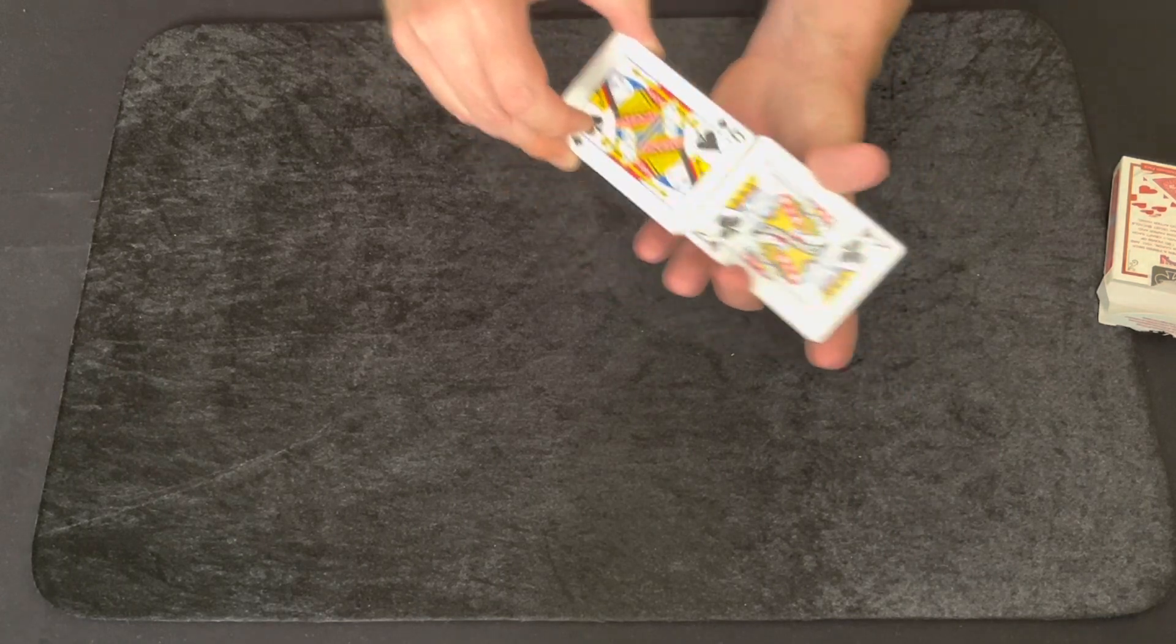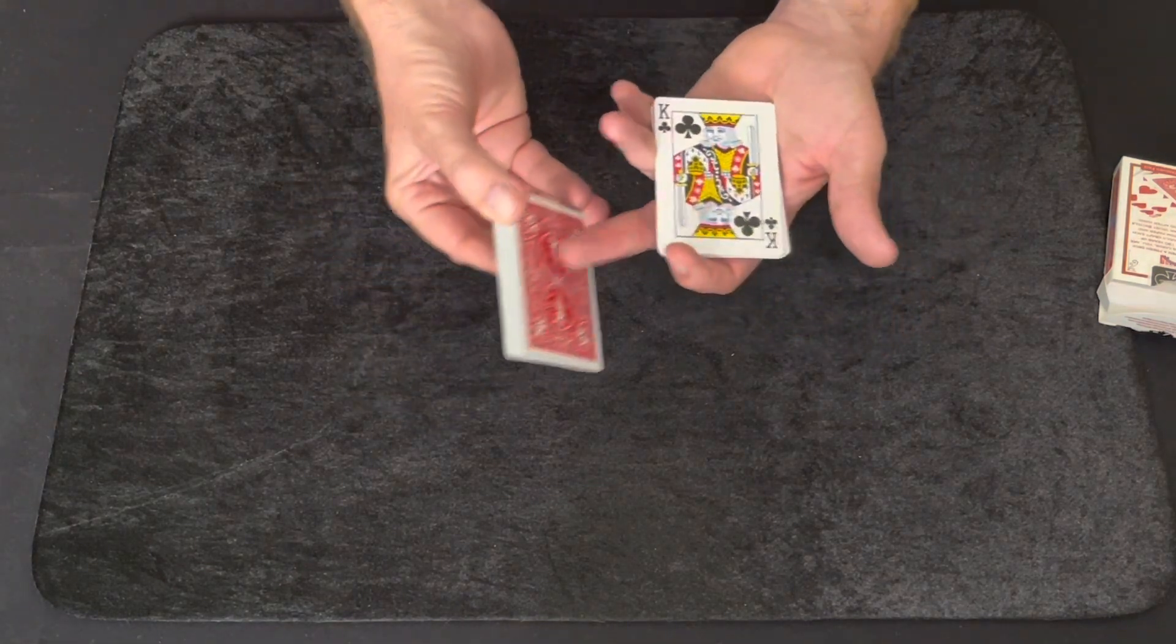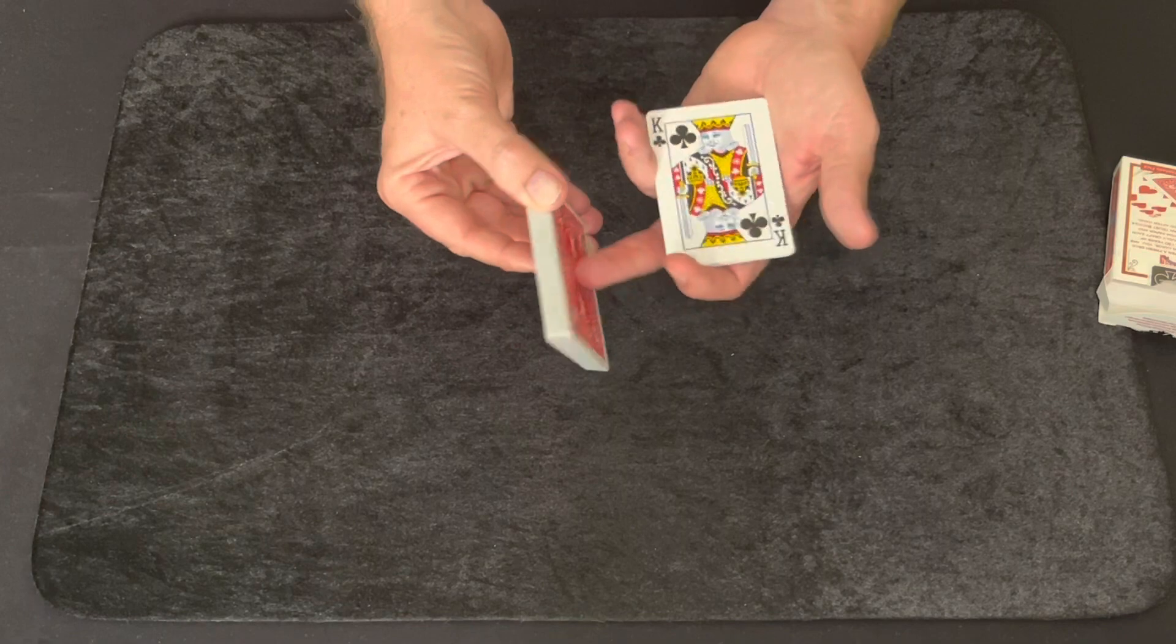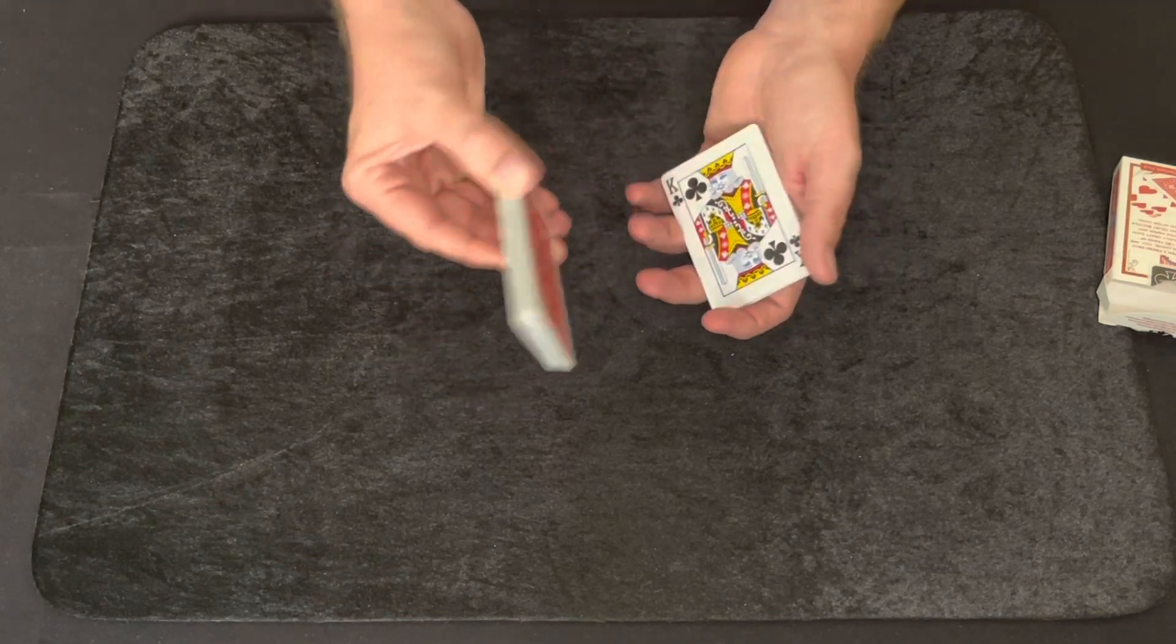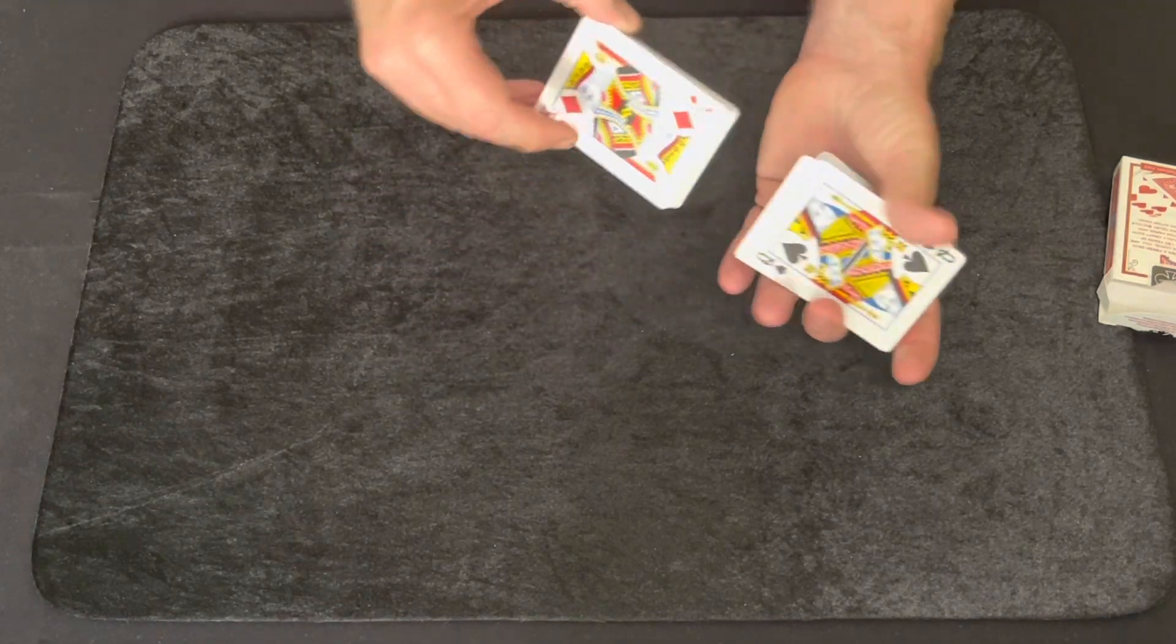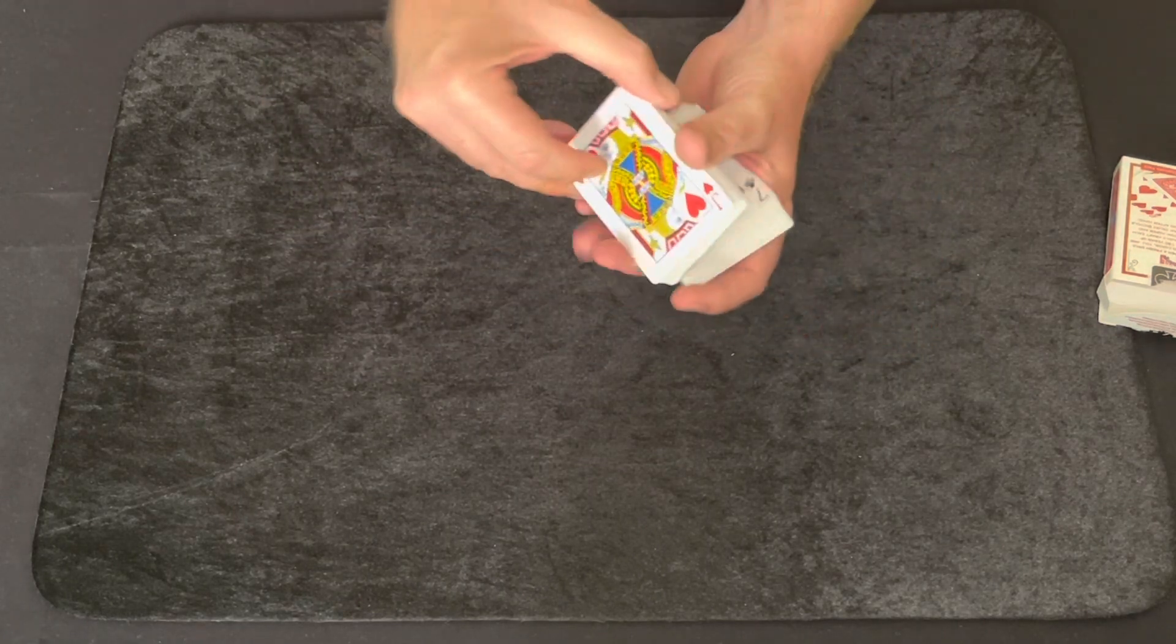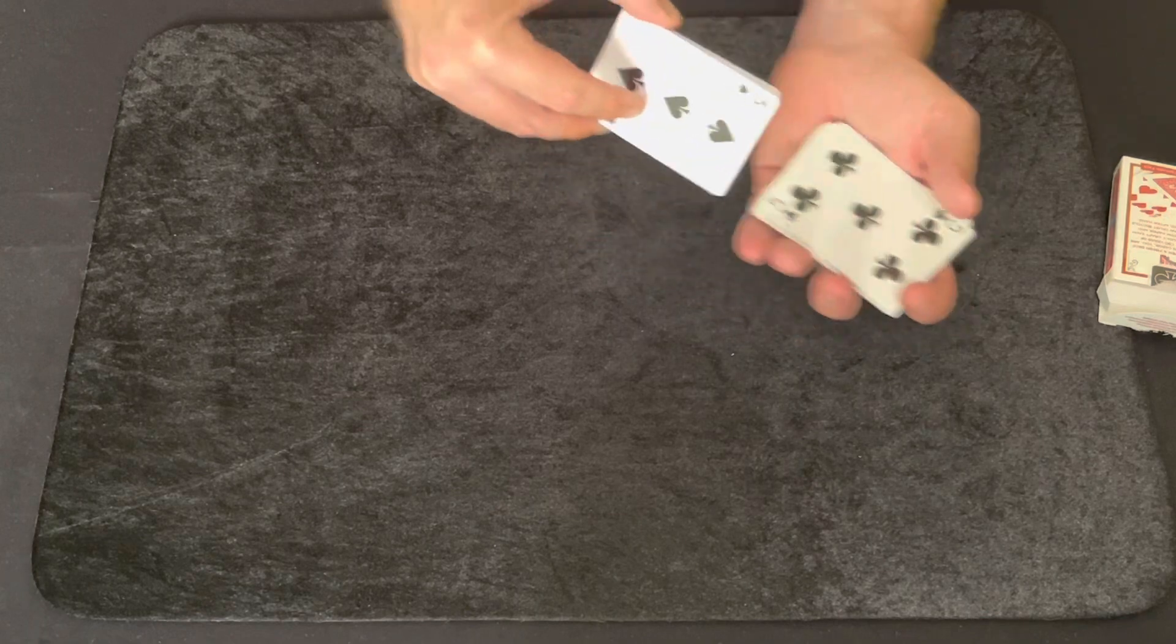Okay, squaring them up every once in a while showing the bottom card. In normal cases this would be the bottom card with the top card because that's never going to change. Going through doing the Hindu shuffle.